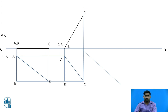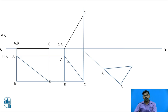Here you will find theta, which is the inclination with the HP. Now, for the third stage, the inclination with the VP is given. Side AB is drawn on this inclined mark.